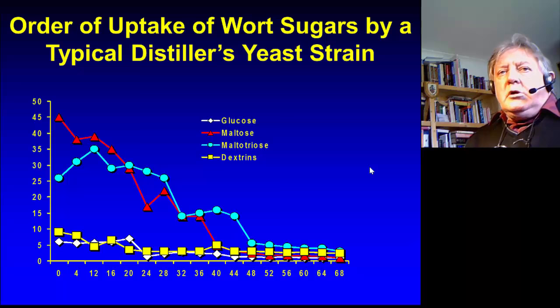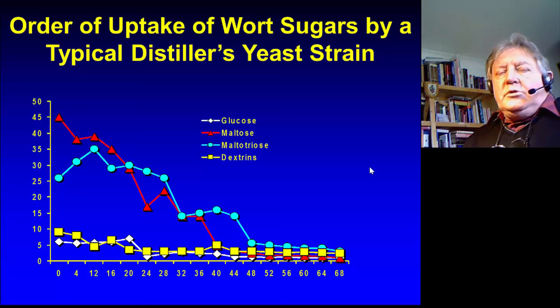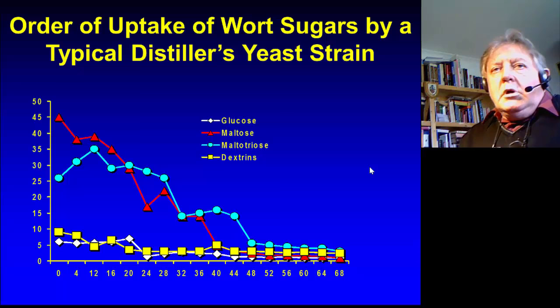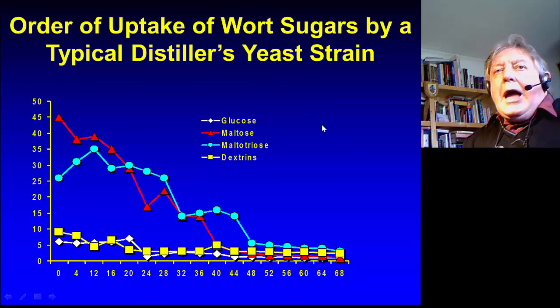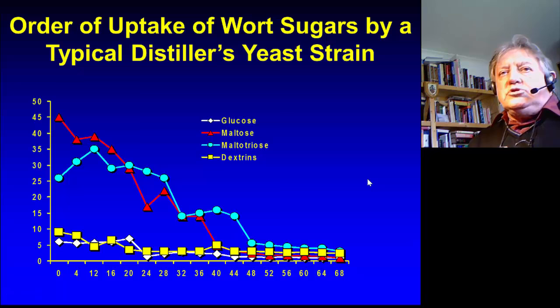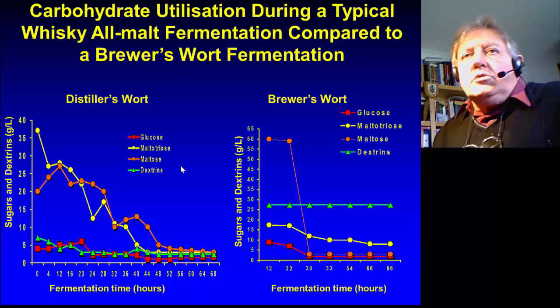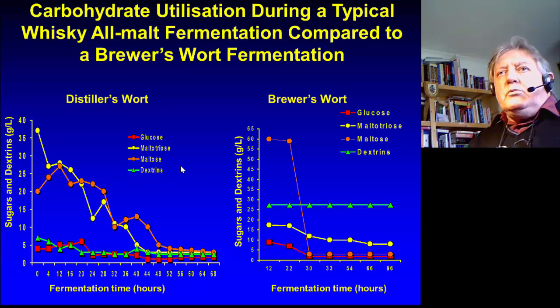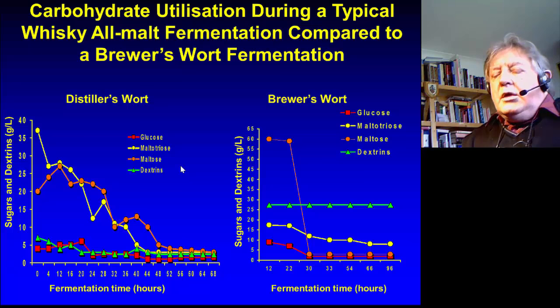Distiller's wort is not boiled — it contains active amylases and proteases. Therefore during the fermentation process, active hydrolysis of wort sugars continues, and the uptake of glucose, maltose, maltotriose, and dextrins because of active amylase in the wort is a very mixed process — not in the ordered sequence you get with brewer's wort. If we look at the next slide, you'll see the uptake of distiller's wort on the left and the uptake of brewer's wort on the right. The brewer's wort uptake is very ordered, whereas the uptake of sugars in distiller's wort is somewhat haphazard.